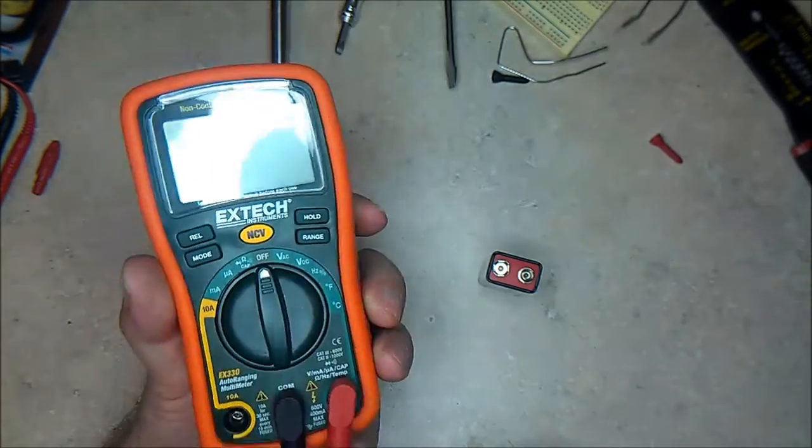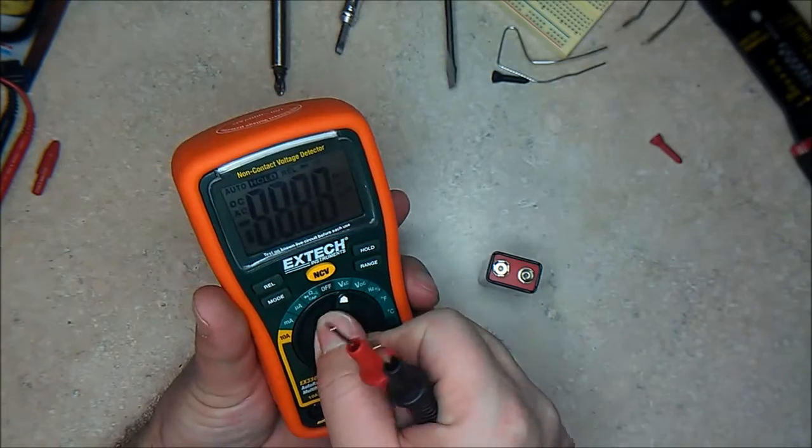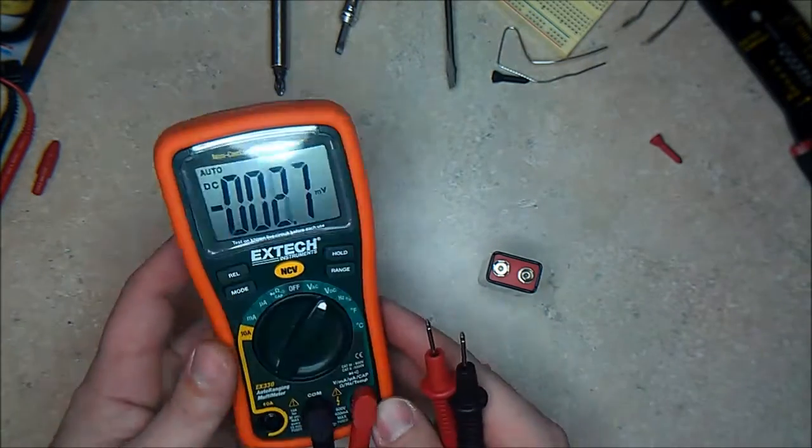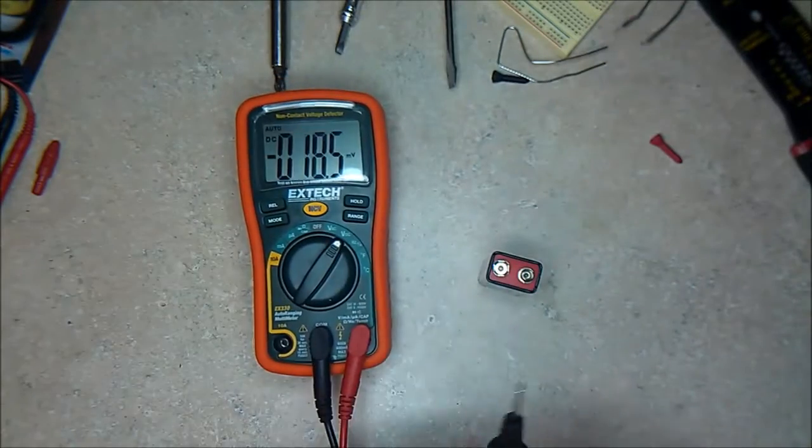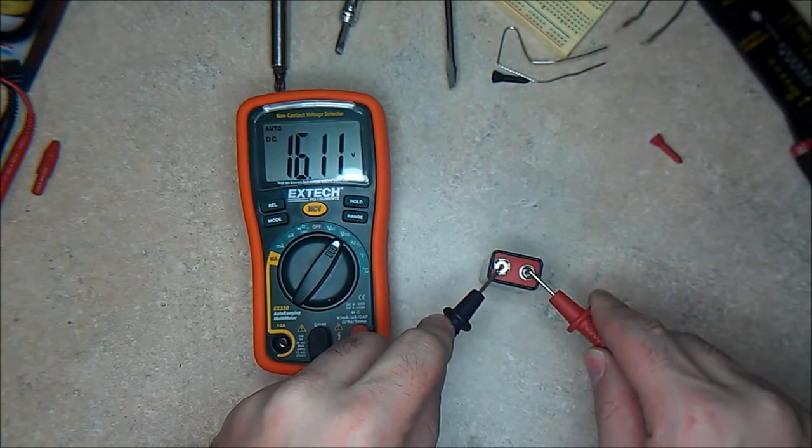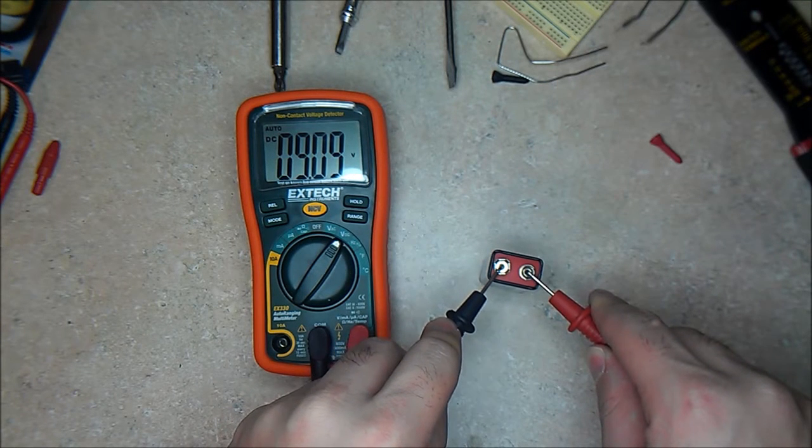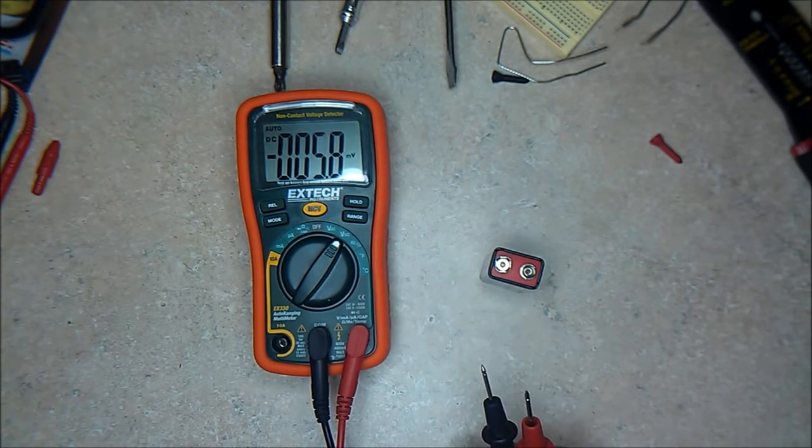So in this case we have this EXTECH EX330. Basically, you put it on volts DC. You can see that right now it will be measuring millivolts, but it's going to change right away after I touch it. We get 9.10 volts, and that's pretty much accurate.